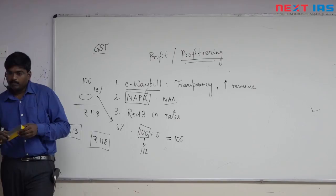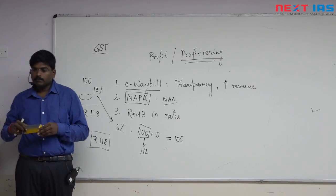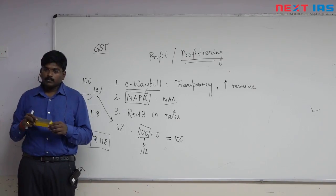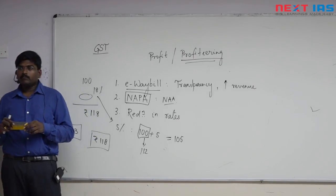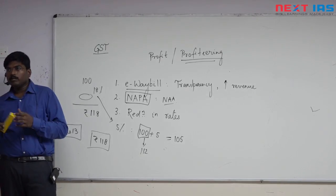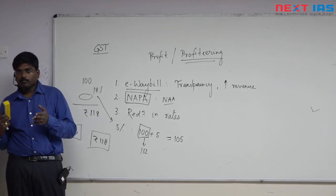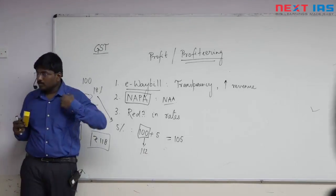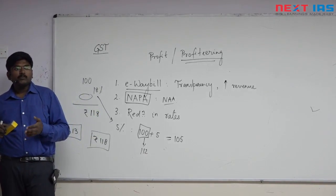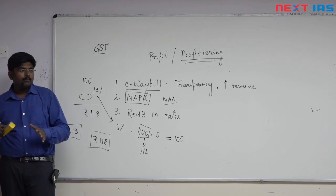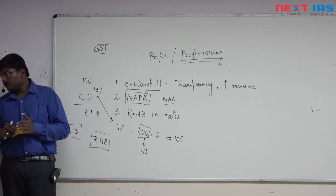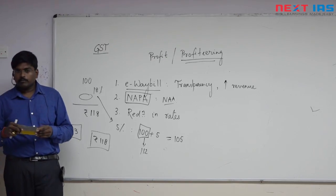Movement of goods of more than Rs 50,000 in value cannot be made by a registered person without an e-way bill — meaning whenever you are transporting or moving goods worth more than Rs 50,000, you need to generate an e-way bill. It is based on Radio Frequency Identification (RFID) technology, which can also be asked in science and technology questions.